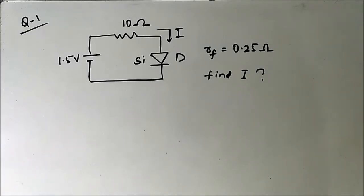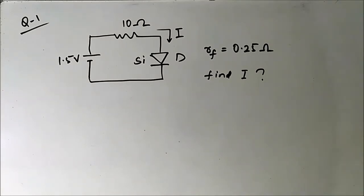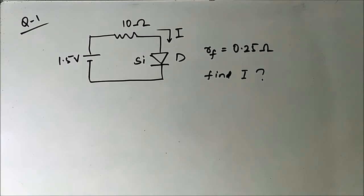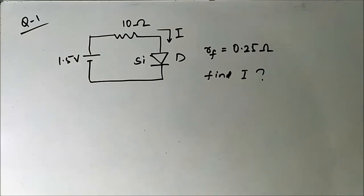Hello friends, welcome to Engineering Tutorial. Today we are going to resume our discussion on analog electronics. In the next series of videos we are going to discuss some questions on diode connections — different ways in which a diode is connected in an electronic circuit and how the presence of a diode can change the behavior of the circuit.